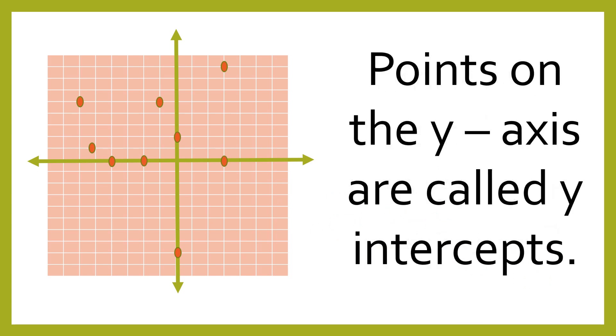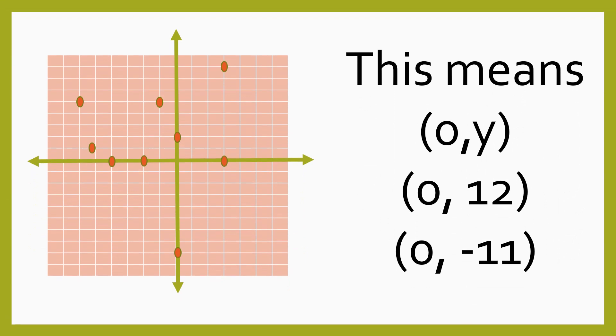Points on the y-axis are called y-intercepts. So these are the points located on our y-axis. This means 0, y. The y can be any value, but your x is 0. For example, 0, 12, or 0, negative 11.